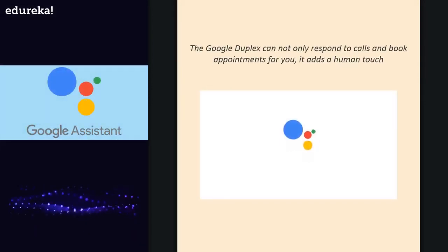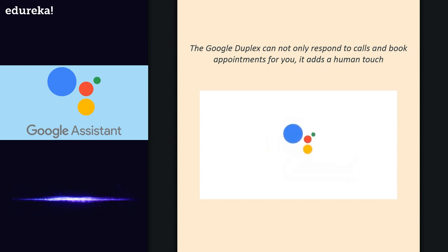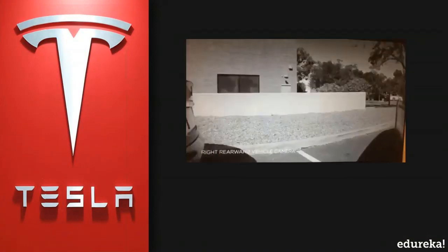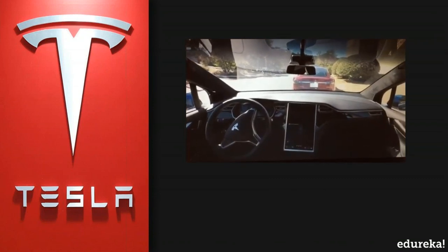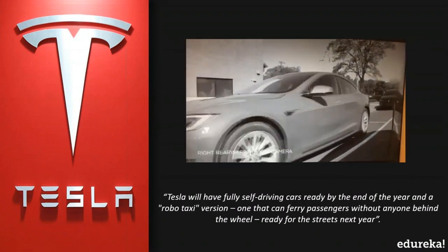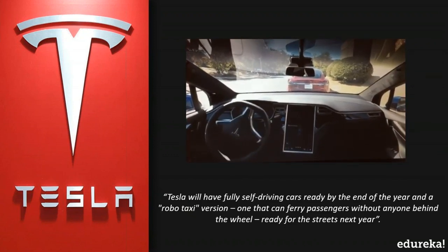We have virtual assistants like Siri and Alexa. Google's newly released virtual assistant, Google Duplex, has astonished millions of people — not only can it respond to calls and book appointments, it also adds a human touch, making it very realistic and hard to distinguish from a human speaking over the phone. Another famous application of AI is self-driving cars. AI implements computer vision, image detection, and deep learning to build cars that can automatically detect objects and obstacles and drive without human intervention. Elon Musk has quoted that Tesla will have fully self-driving cars and a robot taxi version ready soon.